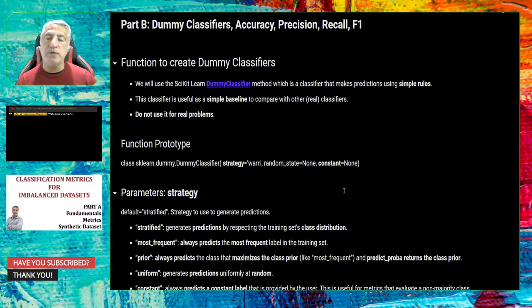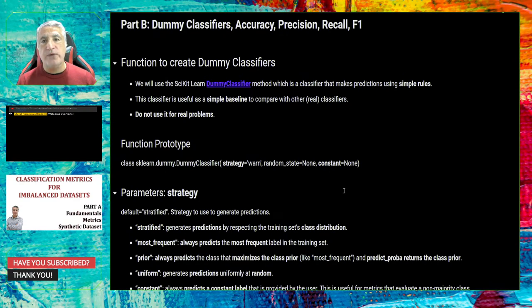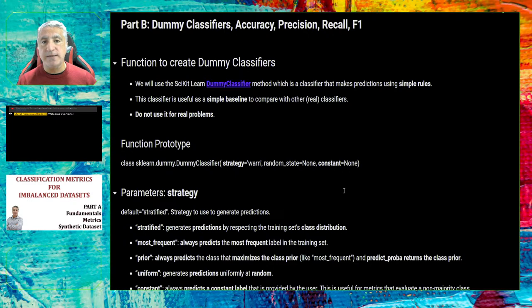In Part B, we are going to talk about how to create dummy classifiers, and cover accuracy, precision, recall, and F1. After creating the dummy classifiers, we are going to measure the success of eight different models using these metrics. We will discuss how some metrics are not enough to select a model to be deployed when using an imbalanced dataset.